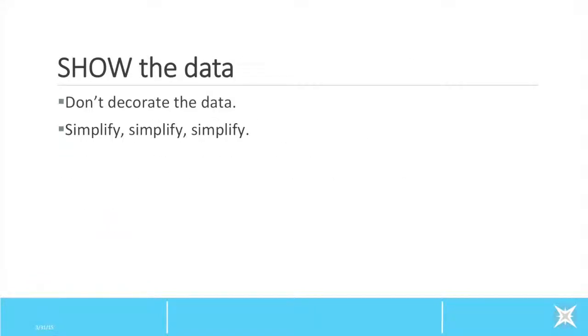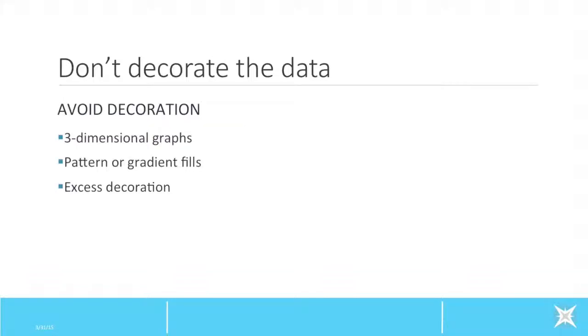Show the data is the third and final step. Essentially, let the data tell the story. Don't decorate the data and simplify, simplify, and simplify. Research shows that features like pictures and 3D rendering are visually distracting and hinder the audience from understanding what is important and what is irrelevant. As designers, you will need to display only meaningful content and abandon anything extra.